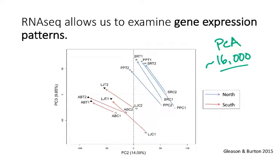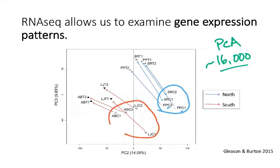In this PCA, we have individuals from Northern California in blue and Southern California in red. There are two different treatments shown here. Each point is an individual. Any individual with a C in the name is a control individual that was not exposed to heat stress. Looking at those control individuals, they are more or less clustered together — Southern individuals with each other, Northern individuals with each other. The arrows connect each respective control to its treatment.